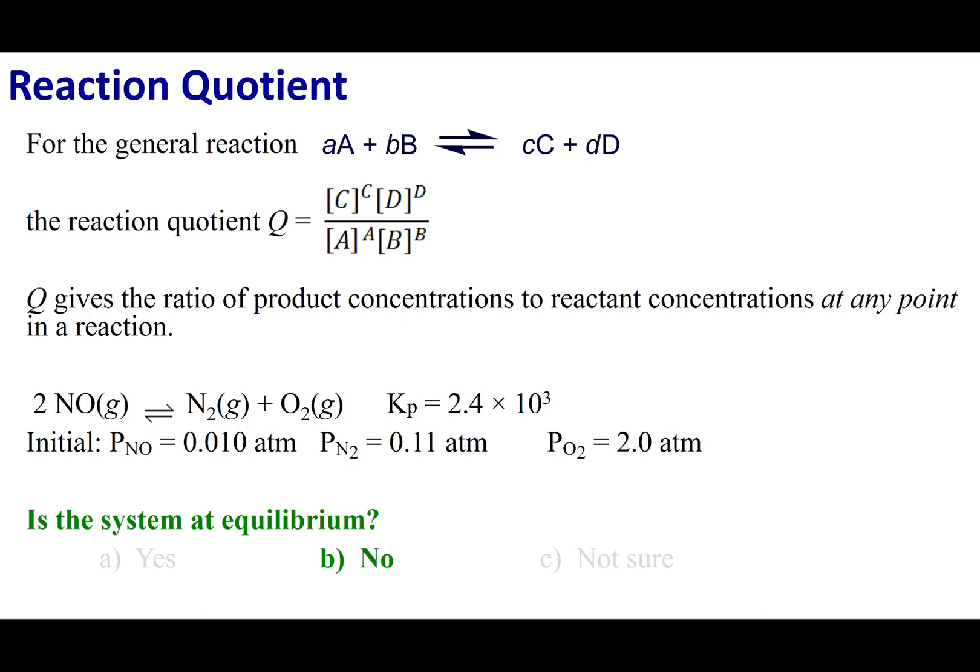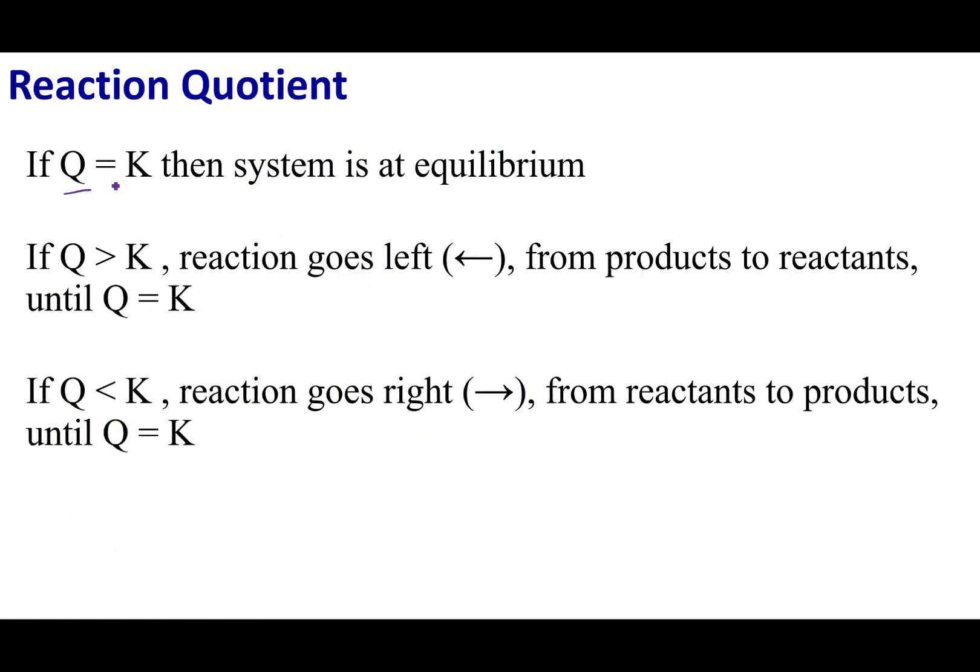Now, what you have to remember is that everything is going to go to equilibrium. And so, if Q equals K, well, I'm at equilibrium, and I'm not going to make products or reactants. Those concentrations are going to remain the same, and everything is fine.